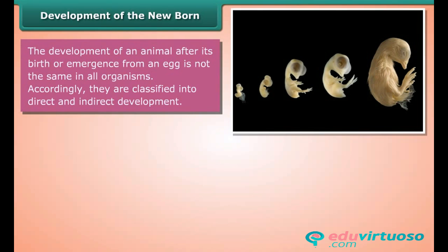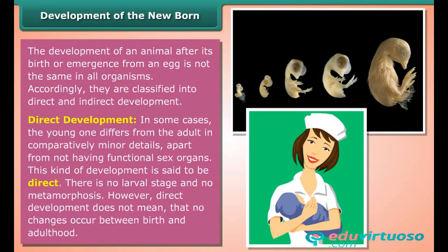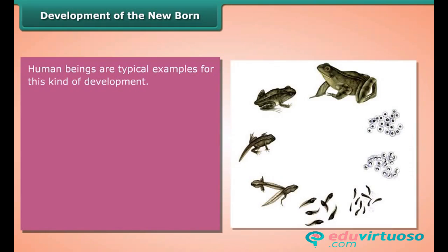Accordingly, animals are classified into direct and indirect development. In direct development, the young one differs from the adult in comparatively minor details apart from not having functional sex organs. There is no larval stage and no metamorphosis; however, direct development does not mean that no changes occur between birth and adulthood. Human beings are typical examples of this kind of development.